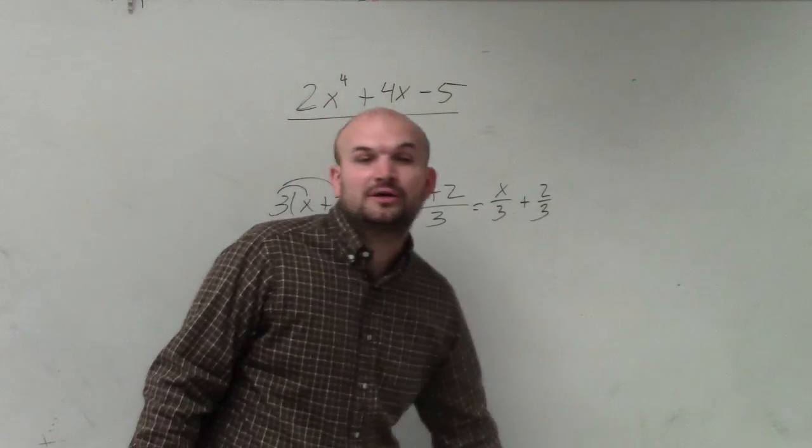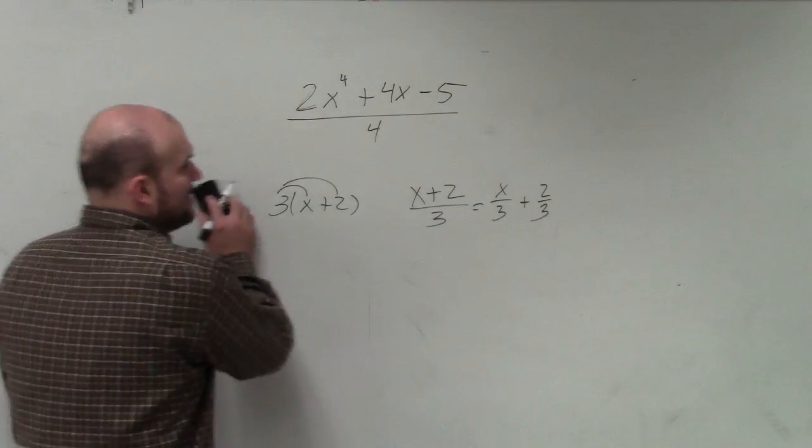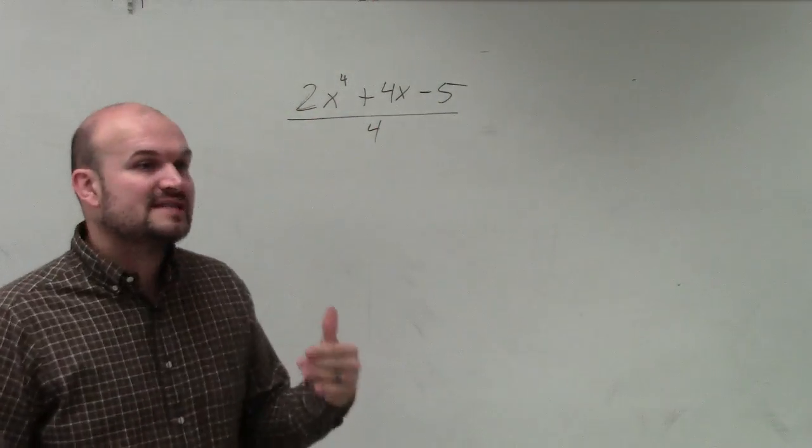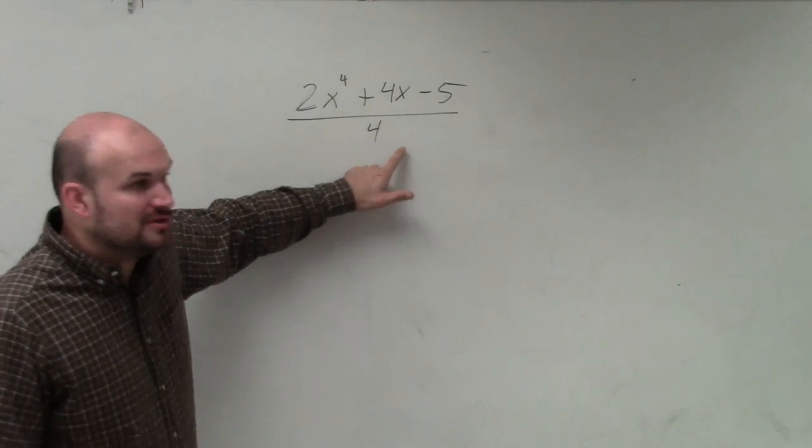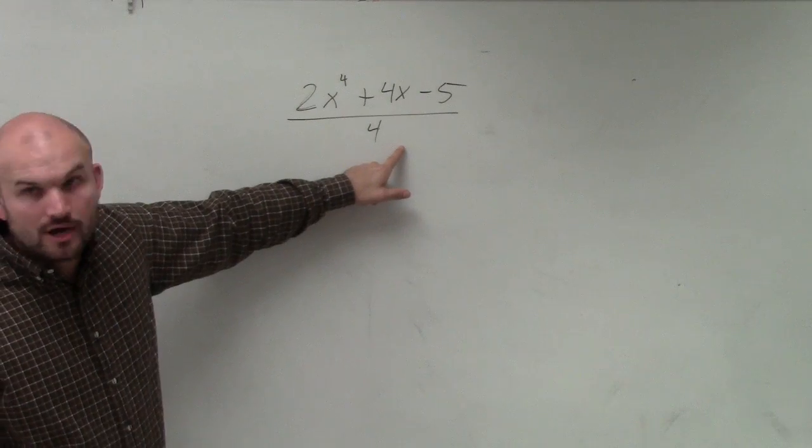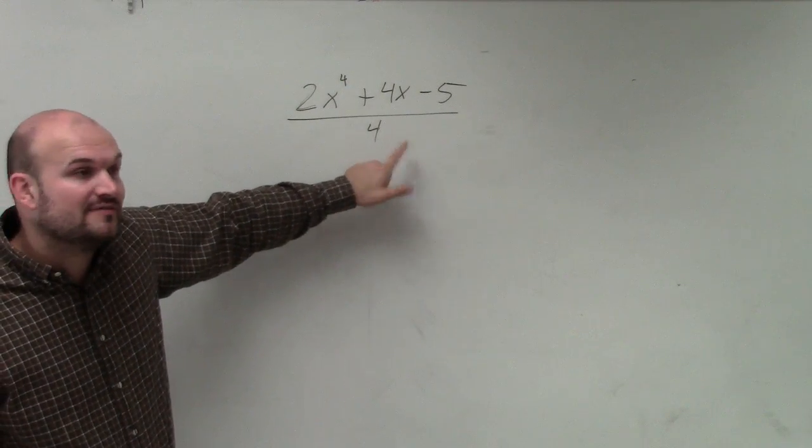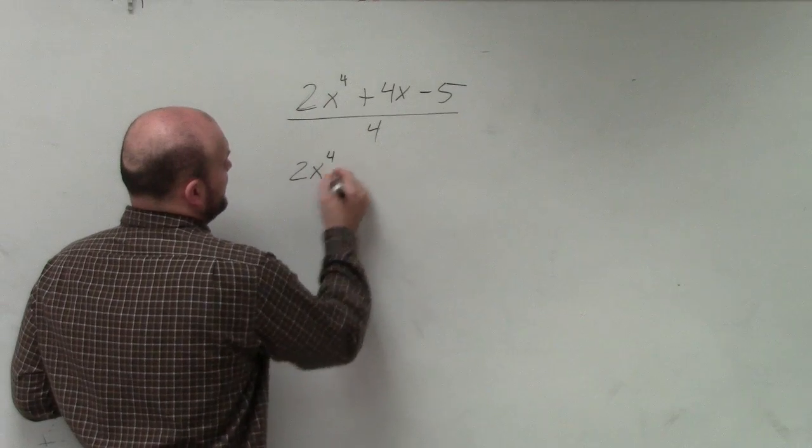Now, this is a polynomial. If you guys remember, I gave you guys examples of when we don't have a polynomial, and one of those examples was when the variable is in the denominator. However, is the variable in the denominator? No. So this still is a polynomial. We can identify the leading coefficient and degree.